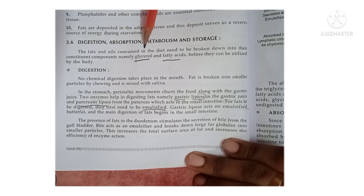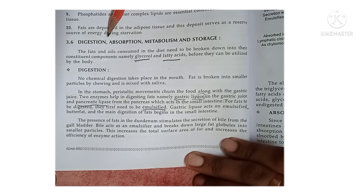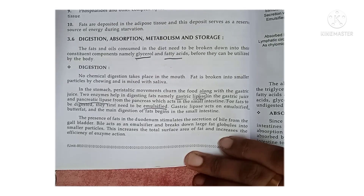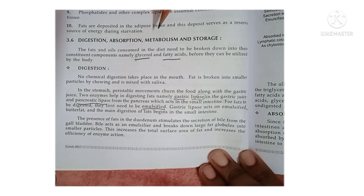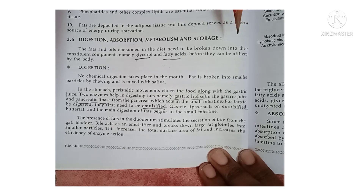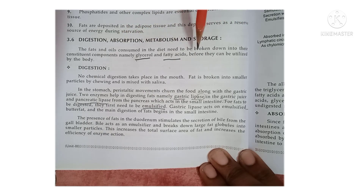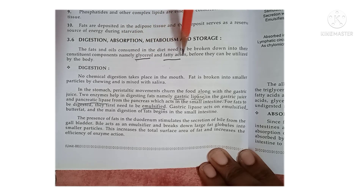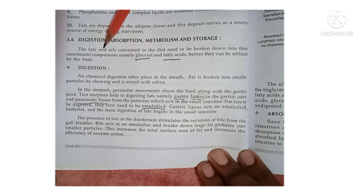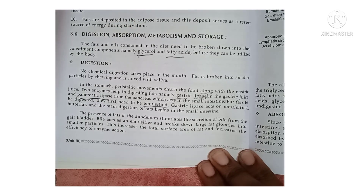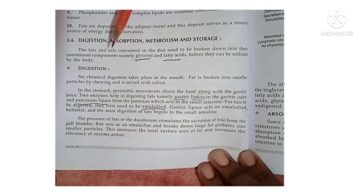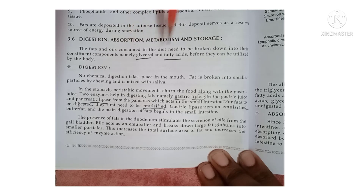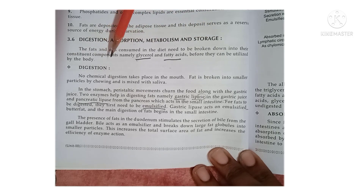The fats and oils you consume in the diet will not be digested, absorbed and metabolized as they are. These complex fat molecules must be broken down into smaller components — like glycerol and fatty acids — which can be easily digested, absorbed and metabolized by the body. For this process there are several steps: digestion, absorption, metabolism and storage, which we are going to discuss in this video.